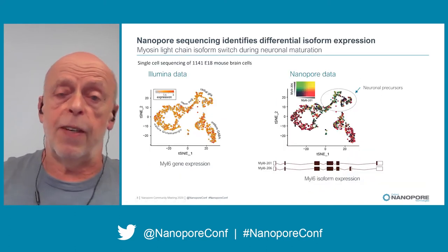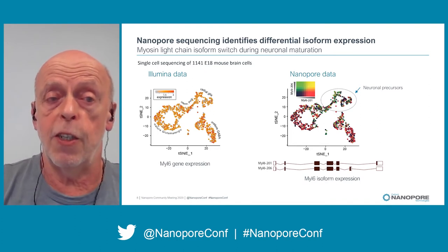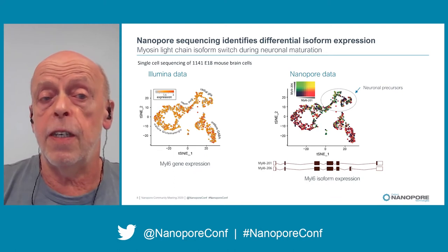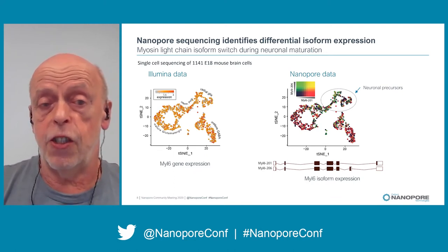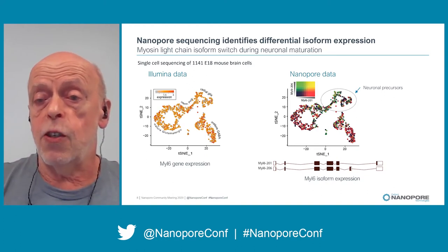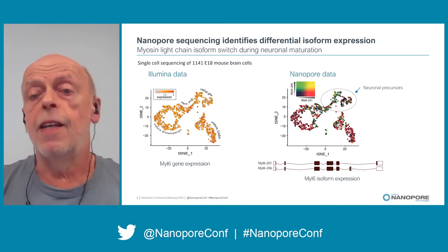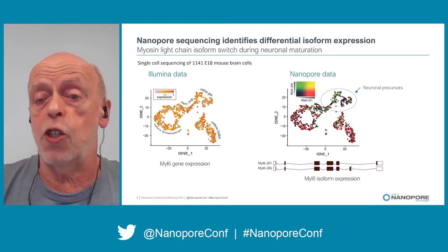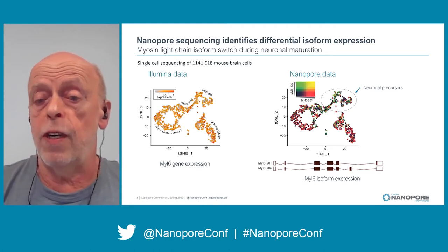Nanopore sequencing of single-cell libraries gives you isoform expression information. I show here one example: it's myosin-light chain in mouse brain. Illumina sequencing just yields gene expression data, but nanopore sequencing reveals an isoform switch. There's one myosin-light chain isoform that's mainly expressed in precursors and the other one in mature neurons — such information you miss if you do Illumina sequencing.